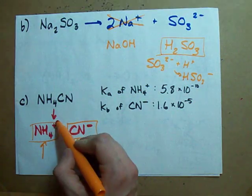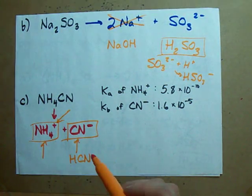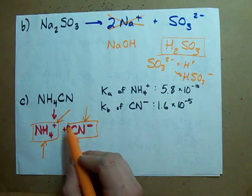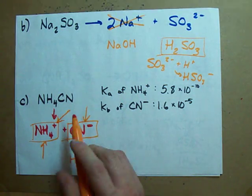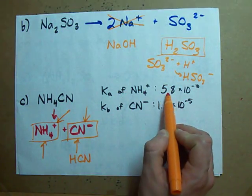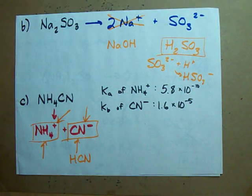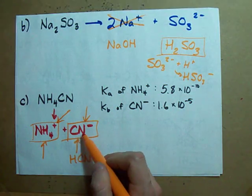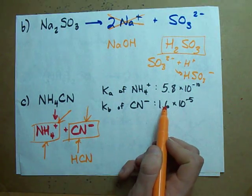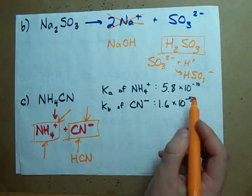You have to look at the Ka of this and the Kb of this to see which one wins out. The Ka, or proton donating ability of this, turns out to be 5.8 × 10^-10. The Kb of this, or proton sucking up ability, turns out to be 1.6 × 10^-5.